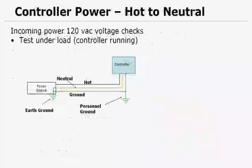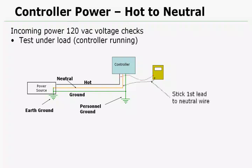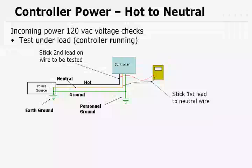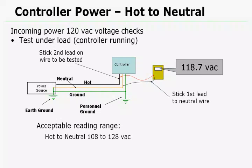Next test is hot to neutral. Test it under load, so have the controller running. First lead we're going to put to the neutral wire, second lead we'll put to the hot wire. Now we get a reading of, in this example, 118.7 volts. Acceptable readings here between 108 and 128.